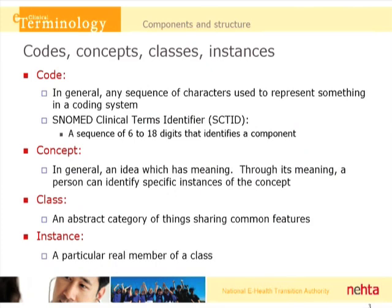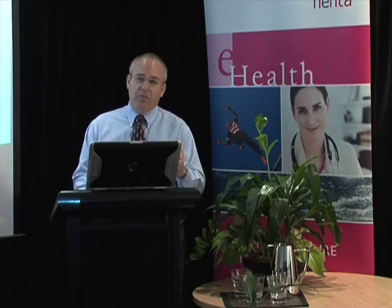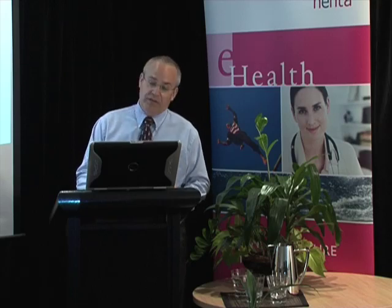We often use the word class to refer to an abstract category of things that share common features. So dog might be a class, and my dog Fido would be an instance of that class — in other words, it's a particular real member of the class. Or arm is a class, and my left arm is a particular instance of that. SNOMED codes generally refer to classes. We often talk about them as being concepts, but they're really ideas that have meaning that refer to classes of real things.